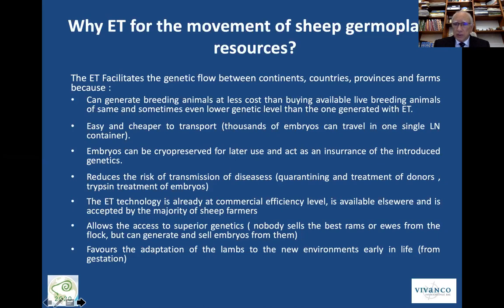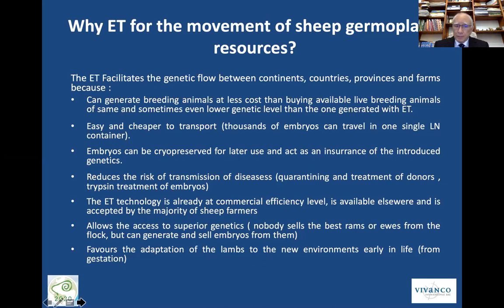And why use embryo transfer for this sheep germplasm movement? Because it can generate animals at far less cost than buying available live breeding animals, and at the same time this genetics is of higher levels than the available live animals in a determined locality. It is easy and cheaper to transport embryos than live animals. The fact that we can cryopreserve the embryos also gives the opportunity to have a kind of insurance on the new genetics that we are introducing. Also, embryo transfer reduces the risk of transmission of diseases.